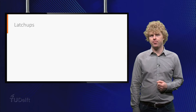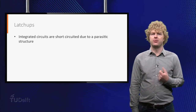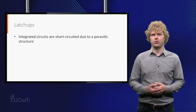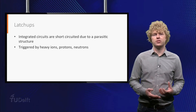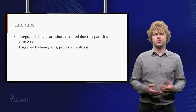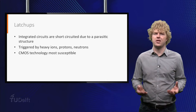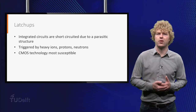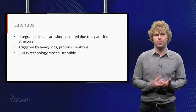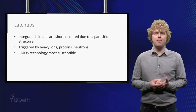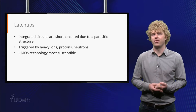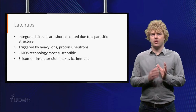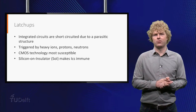Now let's discuss a latch-up. A radiation particle can create a parasitic structure in an integrated circuit; on some locations, this can lead to a short circuit. Latch-ups are triggered by heavy ions, protons and neutrons. CMOS — Complementary Metal Oxide Semiconductor — is most susceptible to latch-up. It is a very popular semiconductor type, as it yields very low power consumption compared to others. This susceptibility can be mitigated by using silicon on insulator substrates for the integrated circuits. The insulator in the substrate prevents parasitic structures which can cause a latch-up.